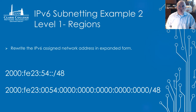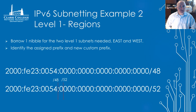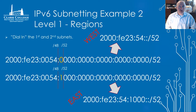Level one of subnetting will be for the regions. Step one: rewrite the IPv6 assigned network address in its expanded form. Step two: borrow the number of nibbles we need — one nibble provides 16 subnets, which is adequate for east and west. We identify the assigned prefix and the new custom prefix by drawing them into the number as shown. Step three: dial in our first and second subnets — 0 and 1 — and write those out in compressed form, assigning them to west and east. That finishes level one.